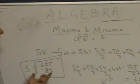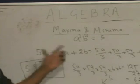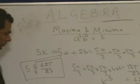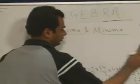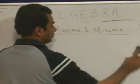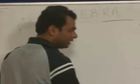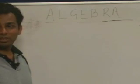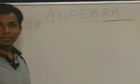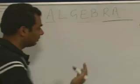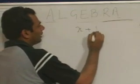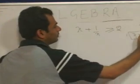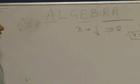This is the minimum value of 5a plus 2b. To summarize: if the sum is constant, the product is maximum; if the product is constant, the sum is minimum. The next application is that x plus 1/x is always greater than or equal to 2, if x is positive.